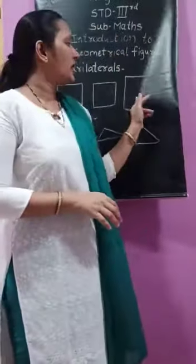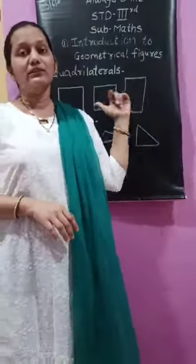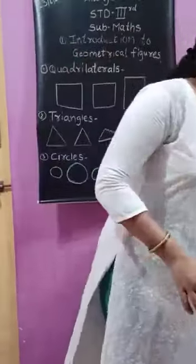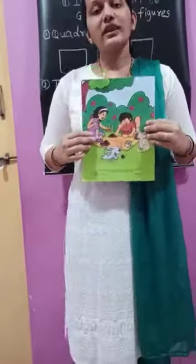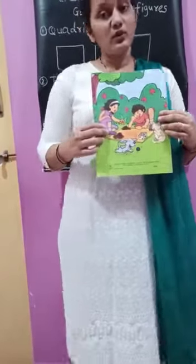Next is rectangle. Rectangle shape — so many things are in rectangle shape. See, this is your maths book, right? This book's shape is rectangle shape.